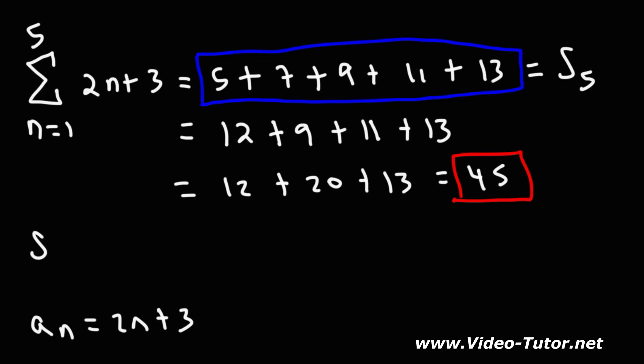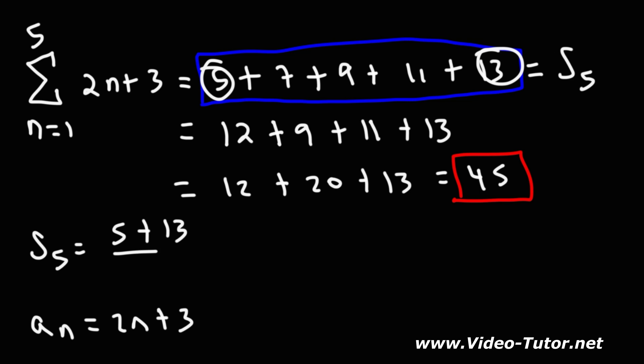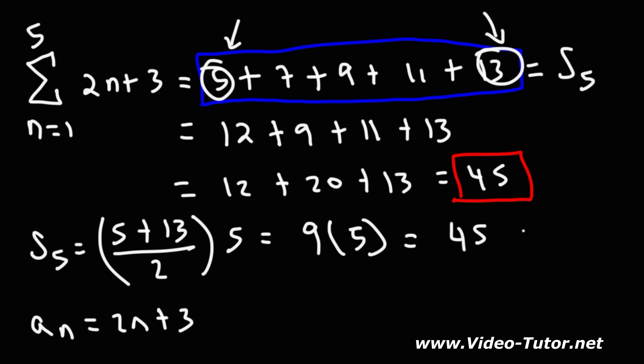We can also use the partial sum formula: take the average of the first and last terms, (5 plus 13) divided by 2, which is 9, then multiply by the number of terms, 5. So 9 times 5 equals 45. Those are the most common formulas for arithmetic sequences. For more example problems, check out the links in the description below.